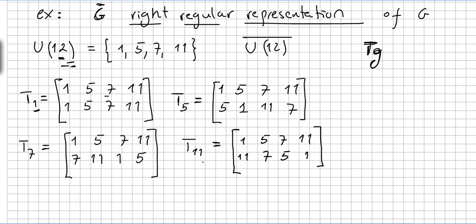And now the transformation of T11: 1 times 11 is 11. 5 times 11 is 55, modulo 12 that is 7. 7 times 11 is 77, modulo 12 that is 5. And 11 times 11 is 121, modulo 12 that is 1.